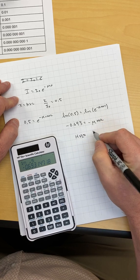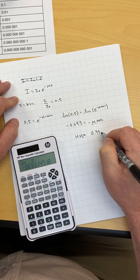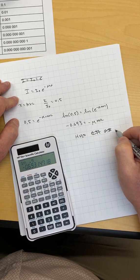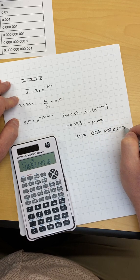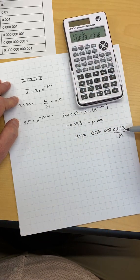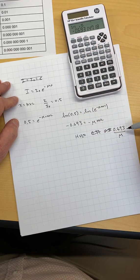HVL is equal to 0.693 divided by mu. Remember, mu has units of 1 over length.